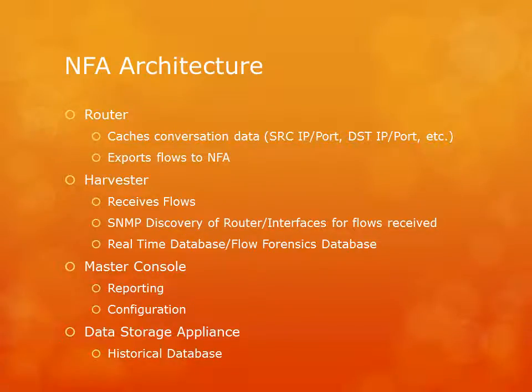Let's talk about what NFA does. The architecture is diverse, but there are several main components. The first line of components is your routers. When you enable NetFlow on a router, it caches conversation data — looking at all conversations going through the router and caching information like source IP address and port, destination IP address and port, through what interface traffic came in, through what interface it's going to leave, TOS value, AS value, etc. Version 5 NetFlow captures a lot of information; Version 9 is even more detailed because it's extensible. The router caches all this data and then we configure it to export that data out to NFA — specifically to the harvester component.